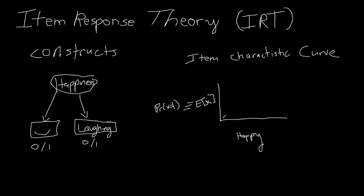We can say that if you're very low on happiness, the probability that you're smiling is really low — basically zero likelihood. But as we get higher on happiness, that likelihood might go up. And if you're really high on happiness, the probability that you're smiling or laughing is probably really high. Item response theory is really about creating this relationship between the happiness level and the expected item response or item characteristic that we're looking at.